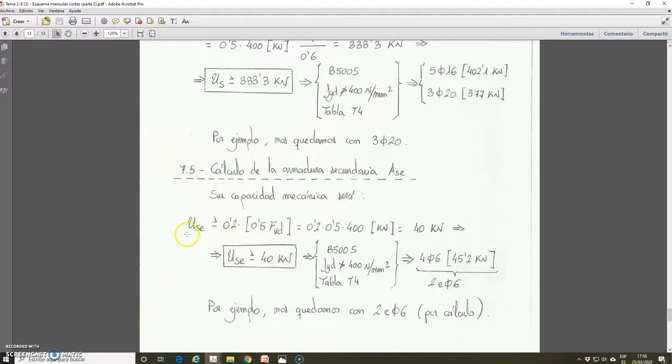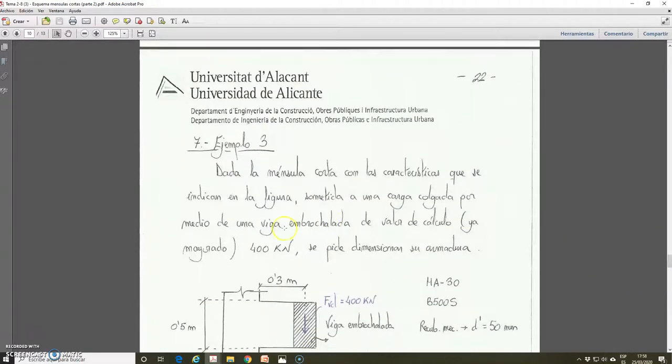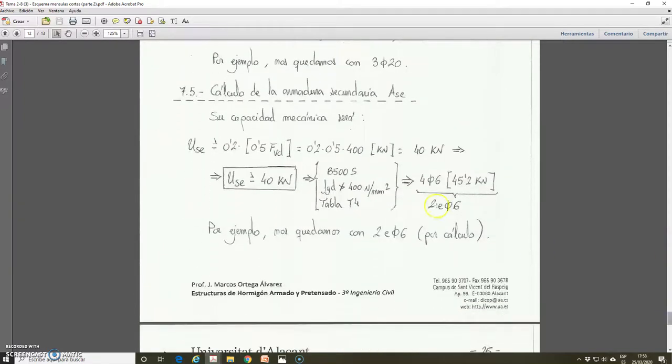We have that the mechanical capacity of the secondary reinforcement must be higher or equal than 0.2 multiplied by 0.5 FBD. FBD was equal to 400 kN. We have here the information in the wording of the exercise. 0.2 multiplied by 0.5 multiplied by 400 kN, then it is equal to 40 kN. Then the mechanical capacity of the secondary reinforcement must be higher or equal than 40 kN. And I remind you that we have a steel B500FS. Here, due to using a strut and tie model, the design yield strength is limited to a maximum value of 400 N/mm².